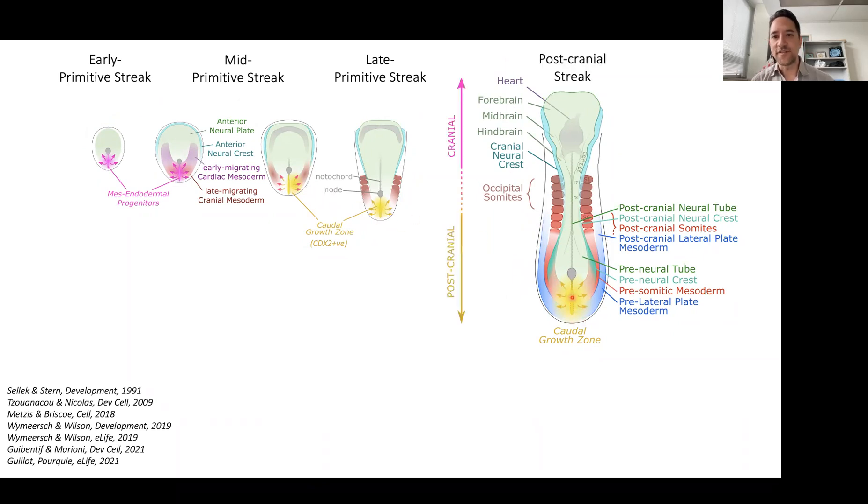This is sometimes referred to as the cranial versus the post-cranial body axis. And these daughter cells from the chordal growth zone, they can slot into many different tissues in the elongating embryo.